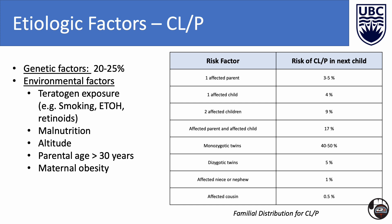Now let's go over the etiologic factors for cleft lip and palate. Genetics contribute to 20 to 25% of non-syndromic oral clefts, where the remainder are associated with environmental factors. Environmental factors that increase the likelihood of cleft lip and palate include teratogen exposure such as smoking, alcohol, anticonvulsants, and retinoids; malnutrition such as low folic acid intake; living at high altitudes; and older parental age, with paternal age being a more significant risk factor. The table to the right details the familial distribution for cleft lip and palate, serving as a valuable resource for understanding familial patterns of this condition.